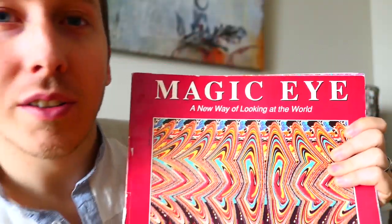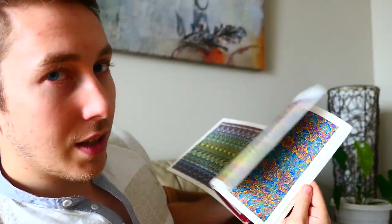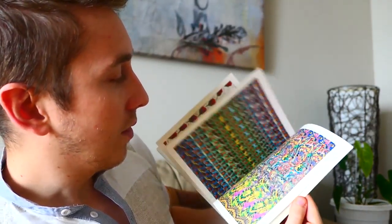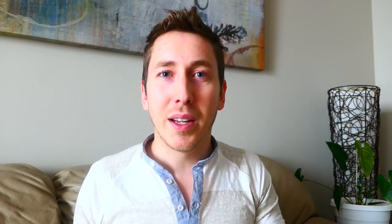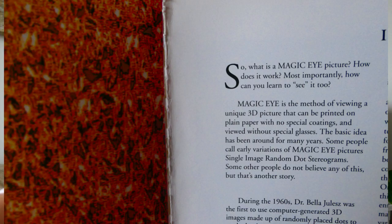Have you ever picked up a book called 'Magic Eye: A New Way of Looking at the World'? If you look at it quickly, it's a book full of different images. I've had this book since I was a kid and I've always been fascinated by the magic behind it — how could it be possible that my brain figures this out? Magic Eye is a method of viewing a unique 3D picture printed on plain paper with no special coatings and viewed without any special glasses. The basic idea has been around for many years; some people call early variations 'single image random dot stereograms.'